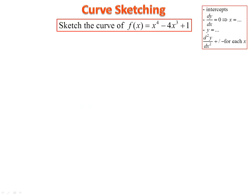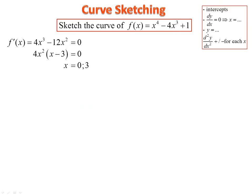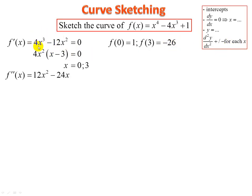Let's now look at a fourth degree polynomial — same system. Set the derivative equal to zero. Take out a common factor of 4x squared. That gives us x equals zero and x equals three. Substitute into the original to get the y-value for each. Then find the second derivative by differentiating again.